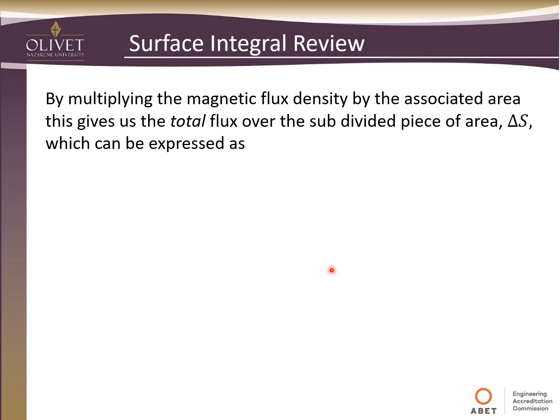So now by multiplying the magnetic flux density by the associated area, this gives us a new term that we want to talk about called the total flux over the subdivided piece of area delta S. Now this can be expressed as this. So this psi character here, this is what represents total flux. And so this makes sense, right? Because if B is the magnetic flux density, that means we have flux over some unit area. If we multiply by the area, then that should just give us flux, the total flux.